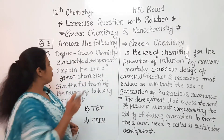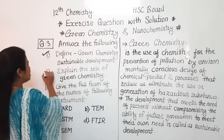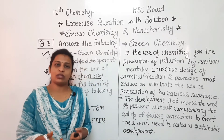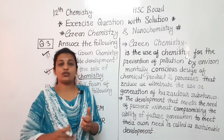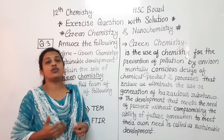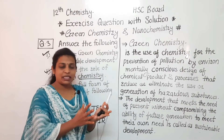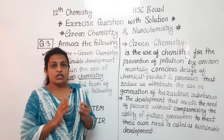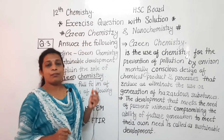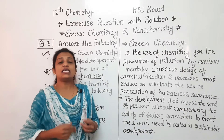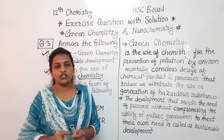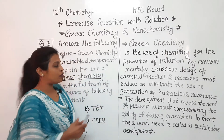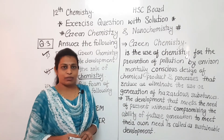Now we will discuss the second question: explain the role of green chemistry. Just as we have goals in life, green chemistry also has a specific role. For instance, using green chemistry we can protect the ozone layer from harmful rays. We can also control chemicals that generate pollution — these are some of the roles of green chemistry that we will discuss one by one.